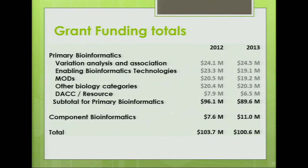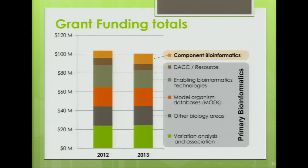Here are some portfolio summaries showing 2012 and 2013 numbers. For primary informatics, it's quite a large component — $103.7 million for 2012 and $100.6 million for 2013. For component informatics, it's about $7.6 million going up to about $11 million in 2013. The majority of the portfolio falls within primary bioinformatics, but there's a reasonably growing component in component bioinformatics, which isn't surprising.